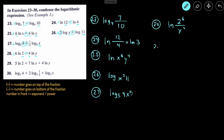Number 29: we write natural log and set up a fraction. We have a plus, so 2 goes on the top, and the coefficient 5 in front becomes the power: 2⁵. There's another plus, so x goes on the top with the 7 in front becoming the power: x⁷. There's another plus, so y goes on the top as well, and the coefficient 4 in front becomes the power: y⁴, giving us ln(2⁵x⁷y⁴).